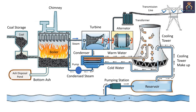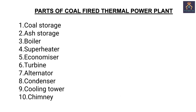You can see this is the basic layout plan of a coal fired thermal power plant. The basic parts of a coal fired thermal power plant are the coal storage, air storage, the boiler, superheater, economizer, turbine, alternator, condenser, cooling tower, and the chimney.